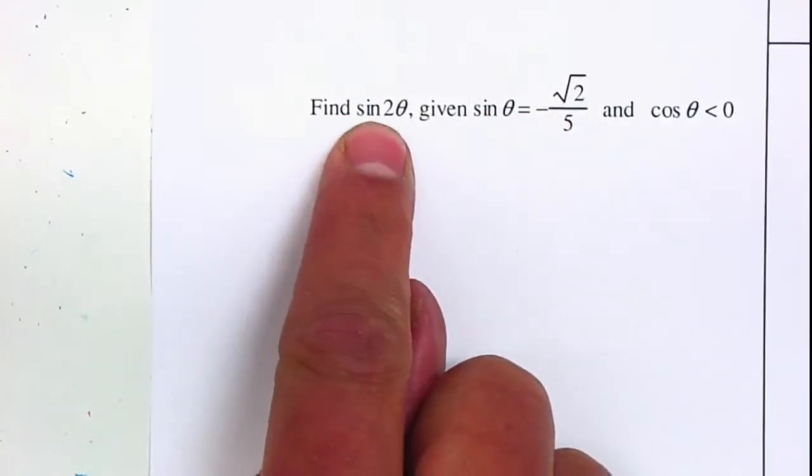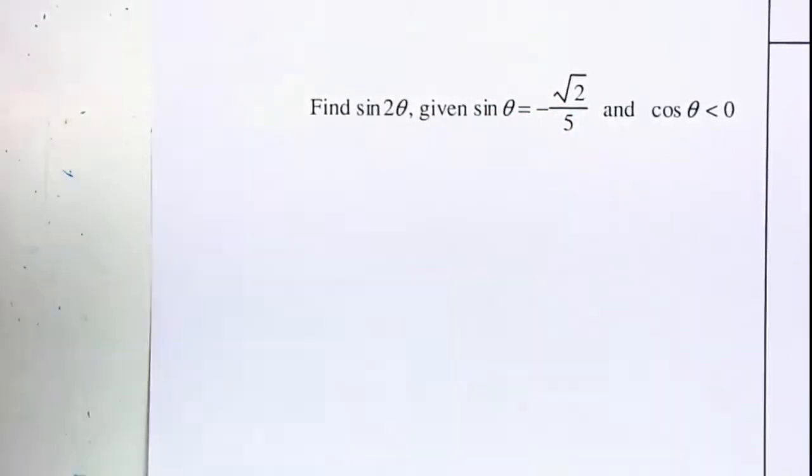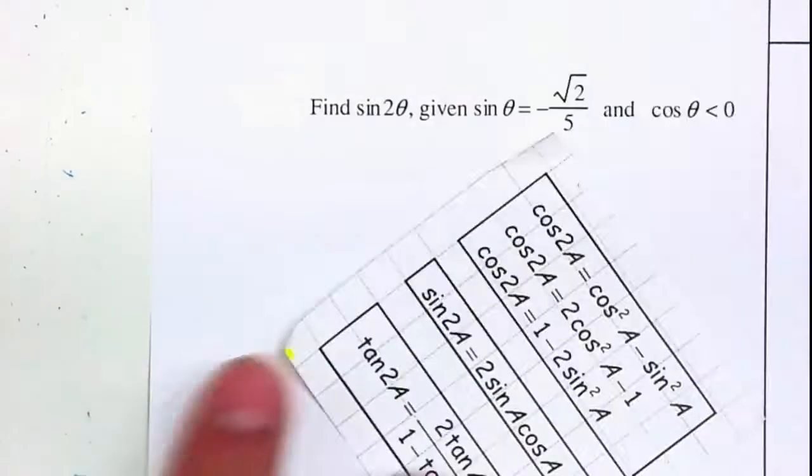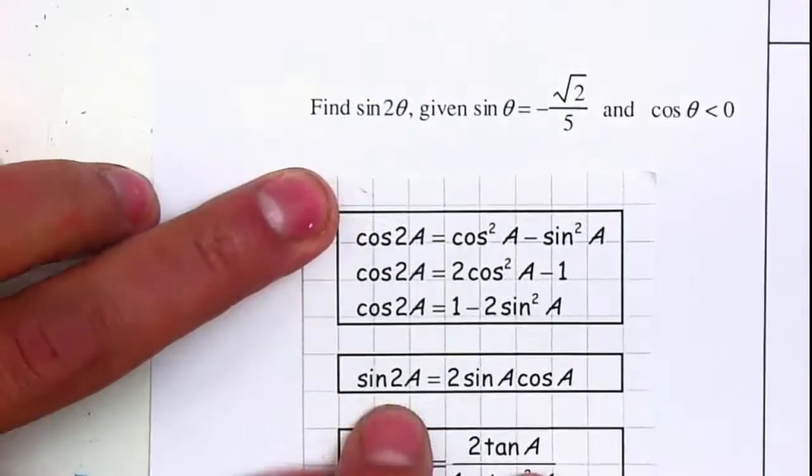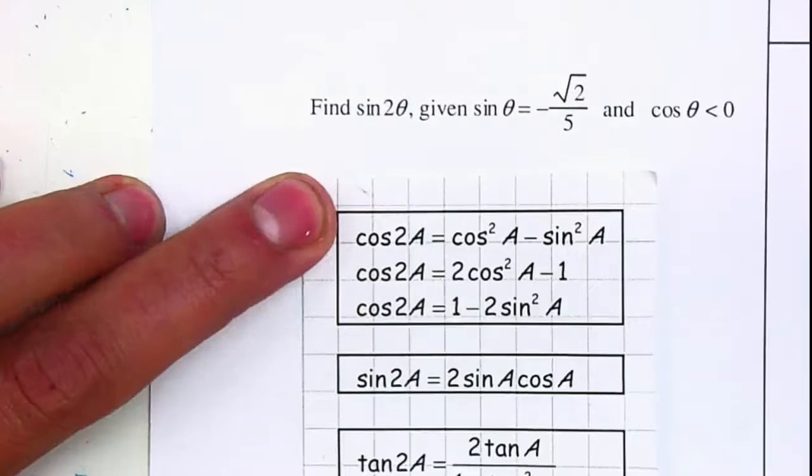Remember, you're looking for the sine of double the angle. So therefore, we are going to be using our identity for sine of 2θ. We only have one to use, so let me go ahead and write it down.